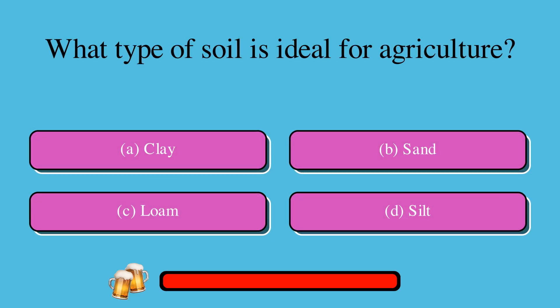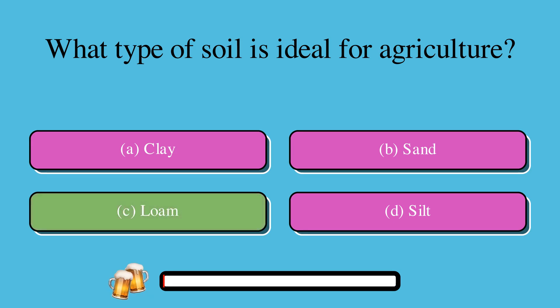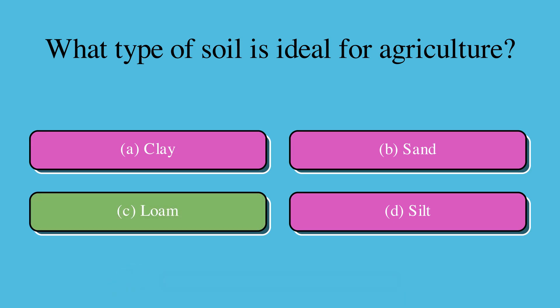What type of soil is ideal for agriculture? A. Clay, or B. Sand, or C. Loam, or D. Silt? The correct answer is C. Loam.